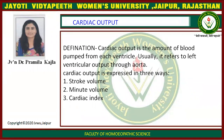Cardiac output is the amount of blood pumped from each ventricle. Usually it refers to left ventricle output. Cardiac output is expressed in three ways: first one is stroke volume, then minute volume, and last one is cardiac index.